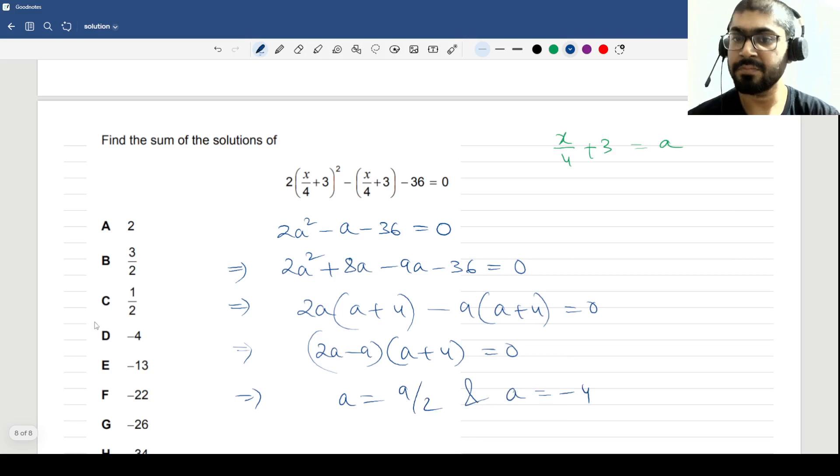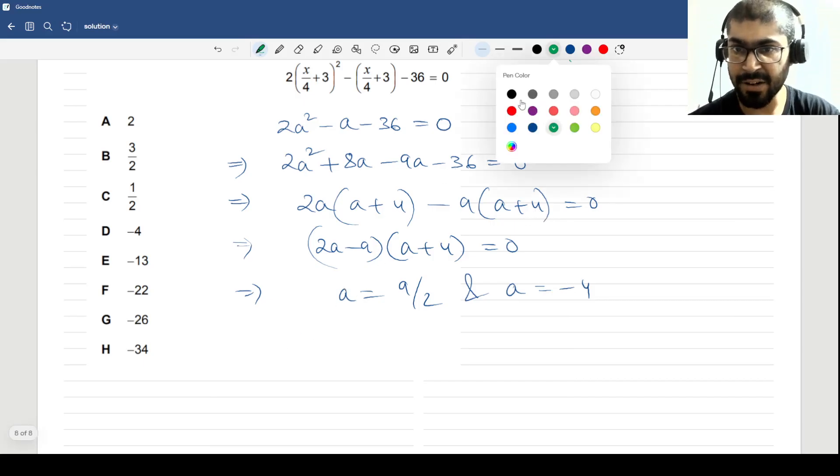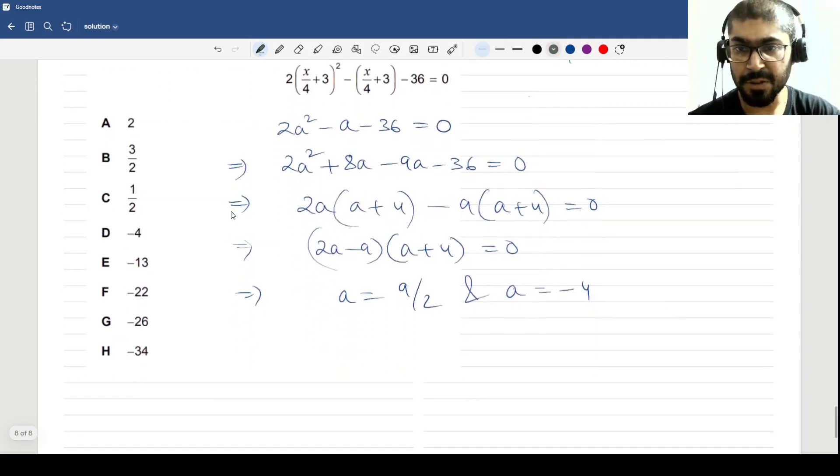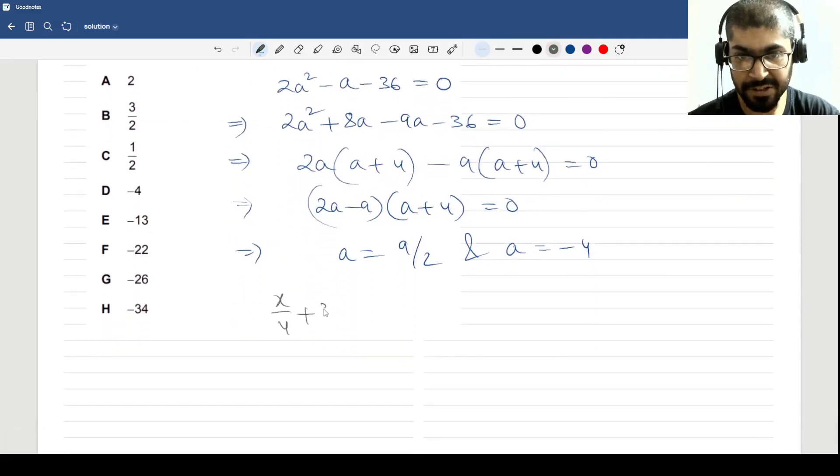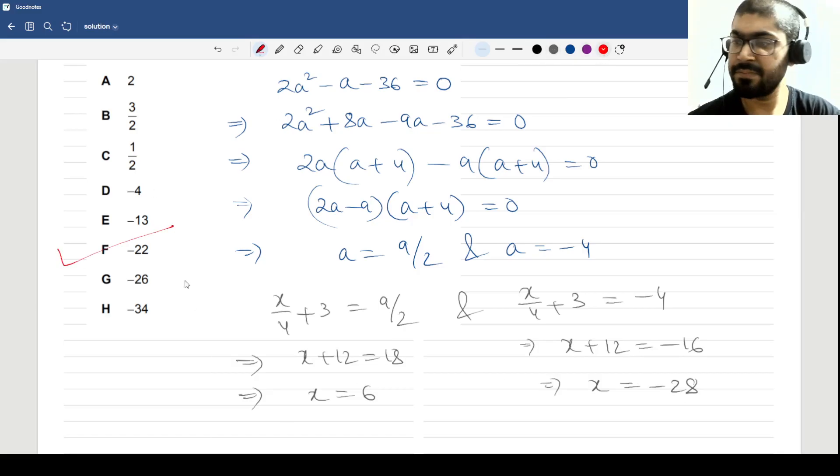Then you have your original assumption, so you can flip your assumption and get the two solutions. x/4 + 3 = 9/2 and x/4 + 3 = -4. This should give you, if I multiply by 4, x + 12 = 18, so x = 6. Here if I multiply by 4, I'll get x + 12 = -16, so x = -28. If I add them I'll get -22, which is option F.